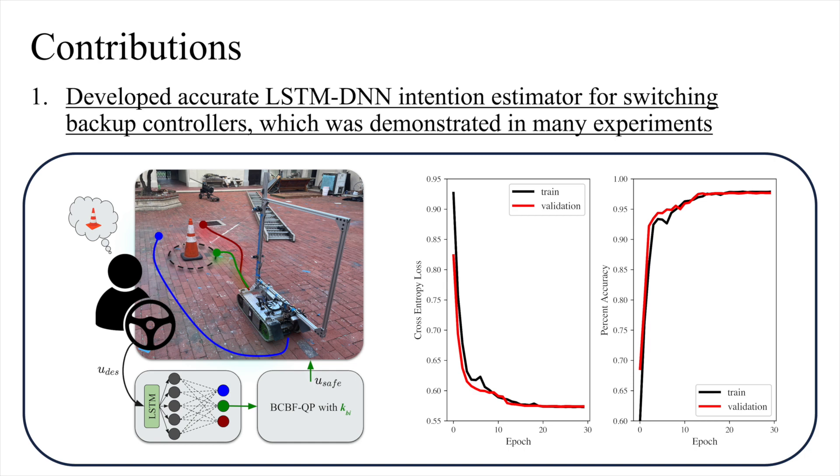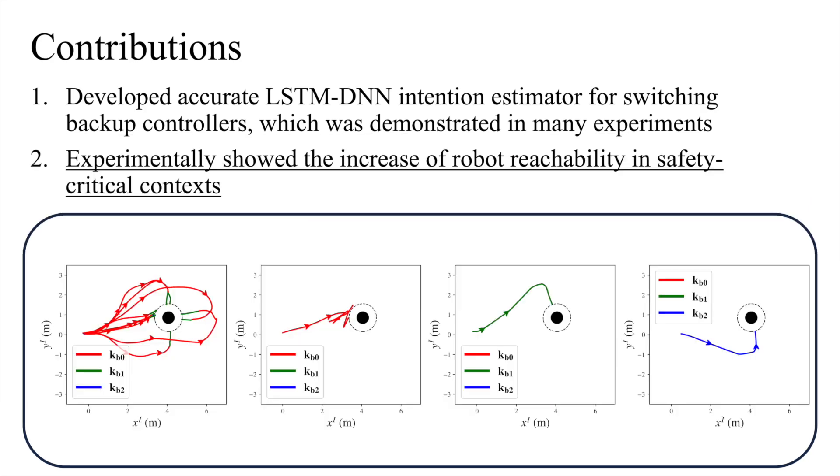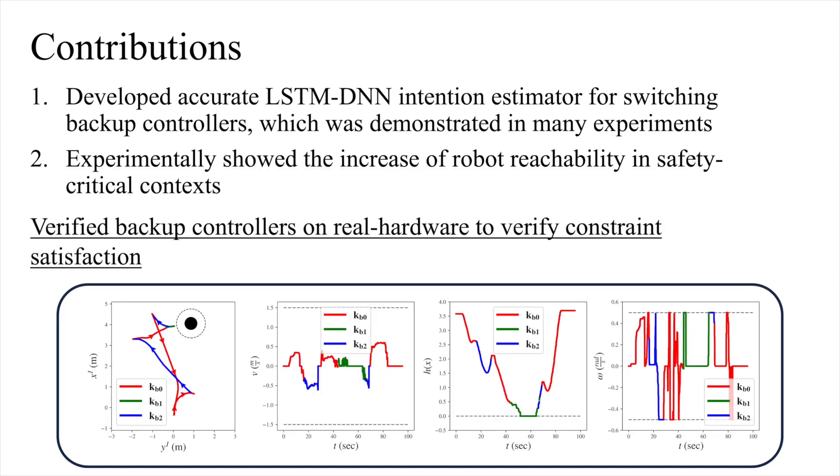In conclusion, this work presents two main contributions. First, we developed the switching law using intention estimation and showed experimentally that it correctly identifies desired backup controllers. Secondly, we experimentally show that our approach increases the general reachability of a robot in safety-critical contexts. Furthermore, we verify backup controllers for the unicycle model on real hardware and confirm safety and input constraints are satisfied.